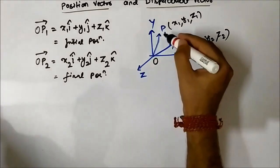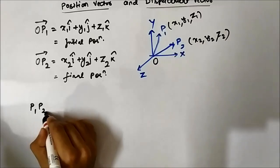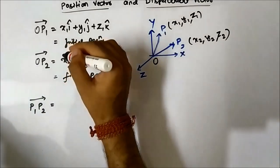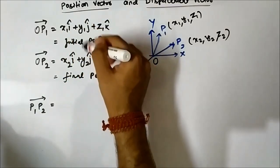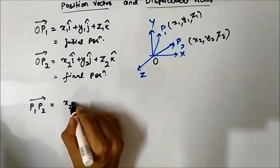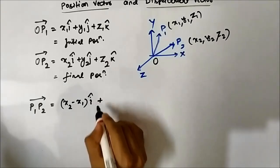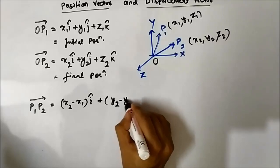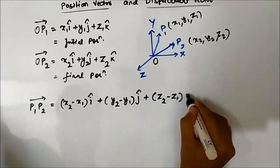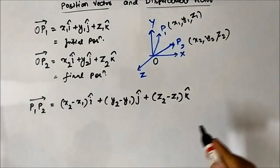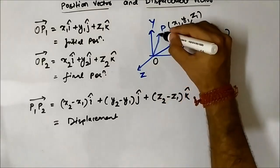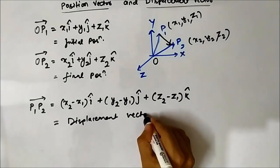The displacement vector P1P2 is simply final position minus initial position. As we did in the 2D case, the x-components are subtracted separately, the y-components separately, and the z-components separately. So the displacement vector is (x2 - x1) î + (y2 - y1) ĵ + (z2 - z1) k̂. This is the displacement vector, and OP1 and OP2 are the position vectors. The same concept applies — just an additional z-component is introduced.